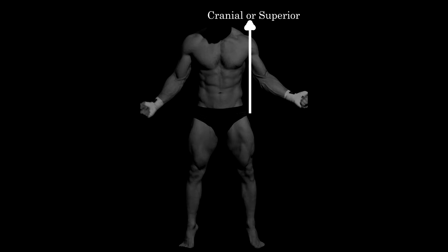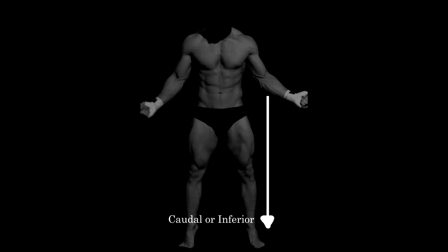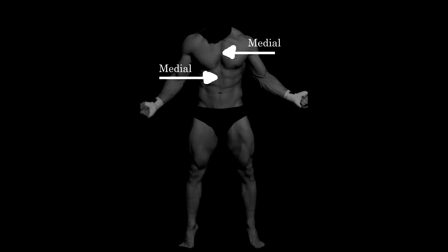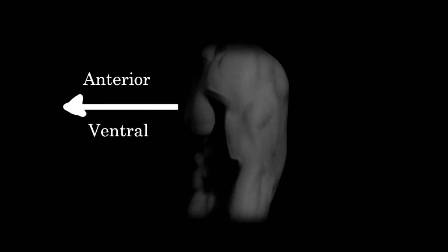Moving upwards towards the head is moving in the cranial or superior direction. Moving downwards towards your feet is moving in the caudal or inferior direction. Moving towards the center of the body is moving in the medial direction. Moving away from the center of the body is moving in the lateral direction.